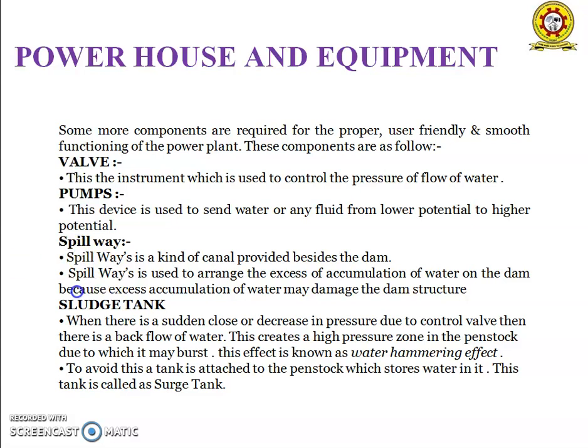Surge tank. When there is a sudden close or decrease in pressure due to the control valve, and there is a bad flow of water, this creates a high pressure zone in the penstock. Due to this, it may burst. This effect is called hammering. When a large amount of water gets backwards in the turbines, this may also burst the penstock. To avoid this hammering effect, a tank is attached to the penstock which is used to store the water. This is known as a surge tank.